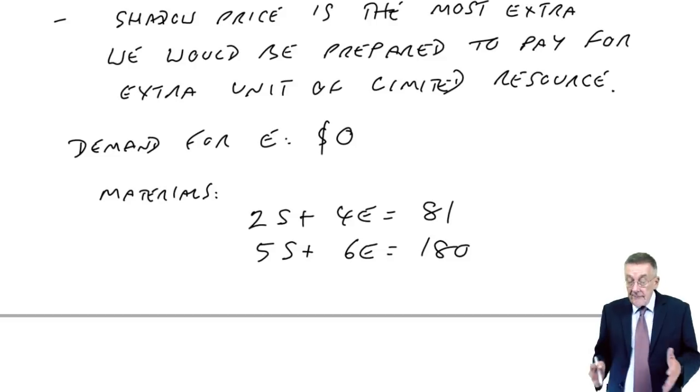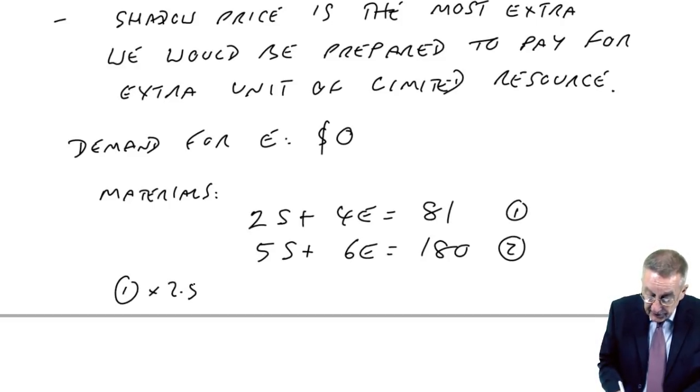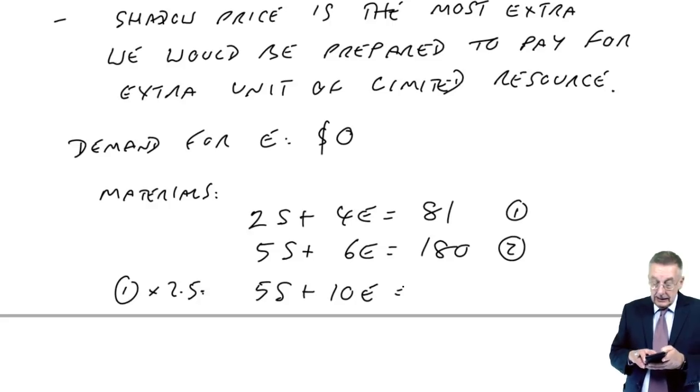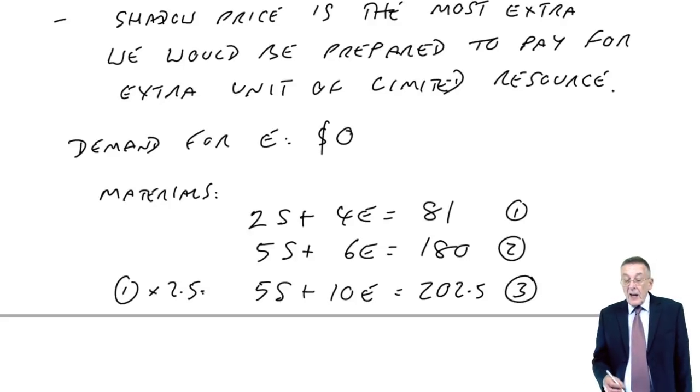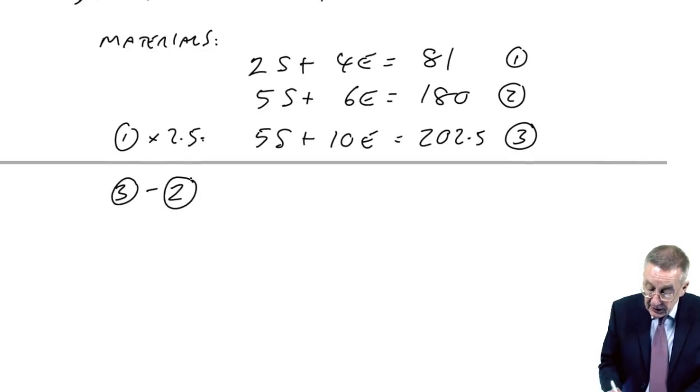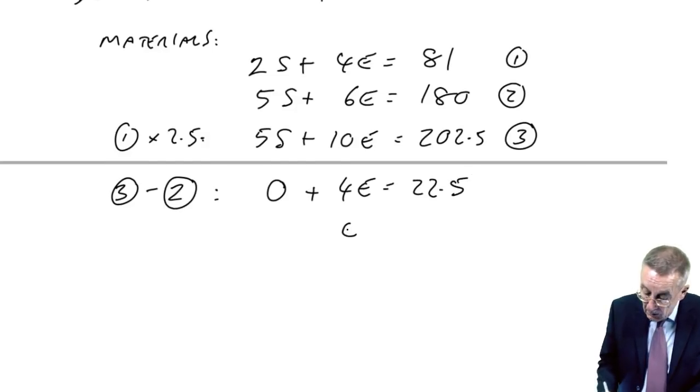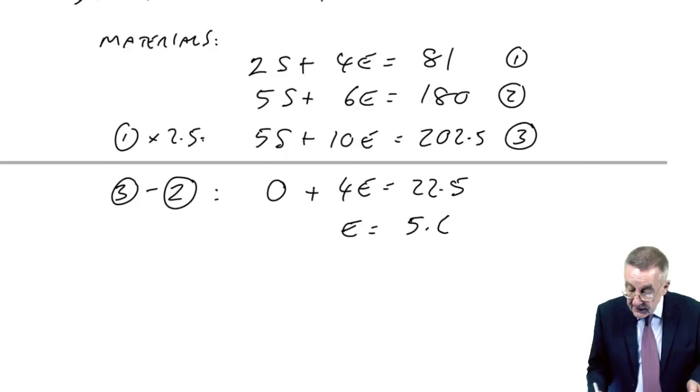We solve them together. I said enough about whichever way you're happy with, but I'll do it the same way I did before. So if I multiply the first equation by 2.5. 2.5 times 2, we get 5S. 2.5 times 4, we get 10E. Now this time 2.5 times 81, I get 202.5. And having got the same number of S's in each equation, if I subtract the second equation from the third, 5S minus 5S is 0. 10E minus 6E is 4E. 202.5 minus 180 is 22.5. E therefore 22.5 divided by 4 becomes 5.625.